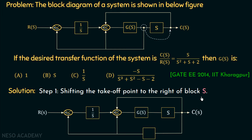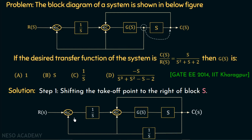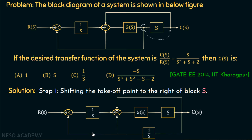After step 1 — shifting the takeoff point to the right of block s — the block diagram will look like this. We have shifted the takeoff point, and due to this we multiply a block of gain 1/s with this takeoff point. The output of this takeoff point is given as input to the two adders. Now, block G(s) and block s are in series and we can multiply their gains. Also, the takeoff point of gain 1/s acts as a negative feedback for both adders, so if we split this takeoff point, we have two negative feedbacks of gain 1/s — one for each adder.